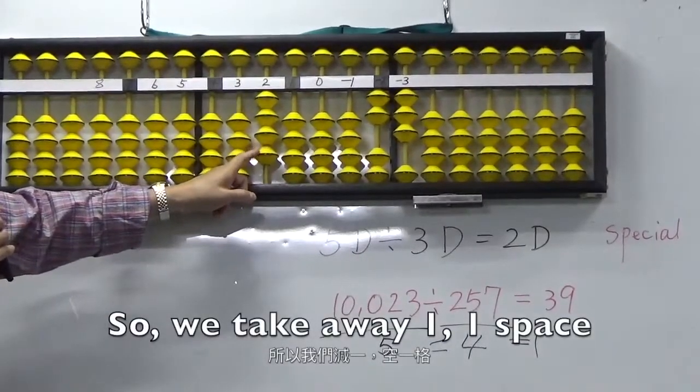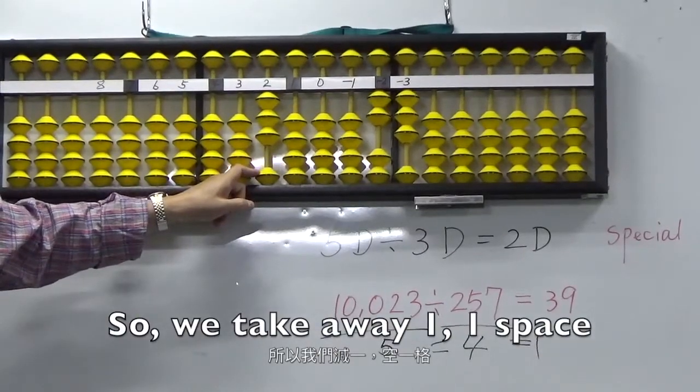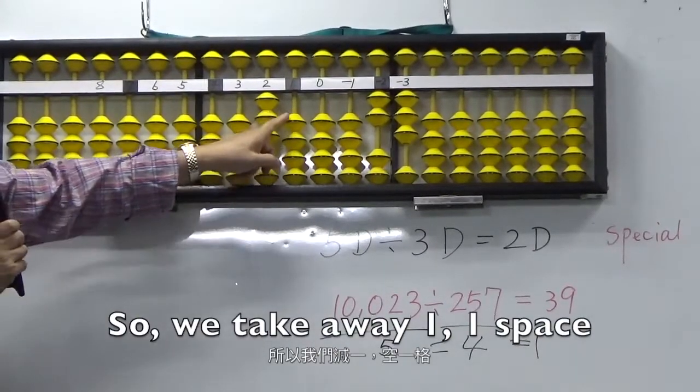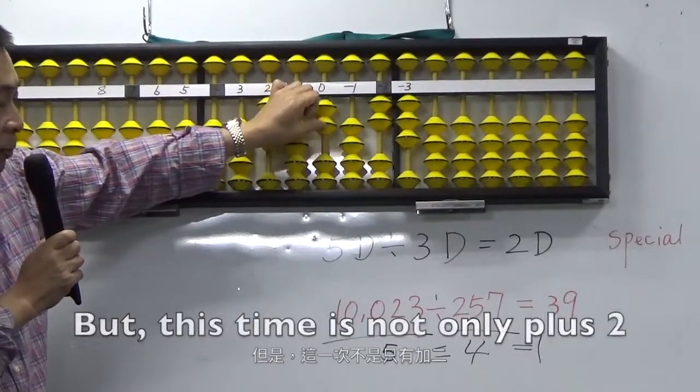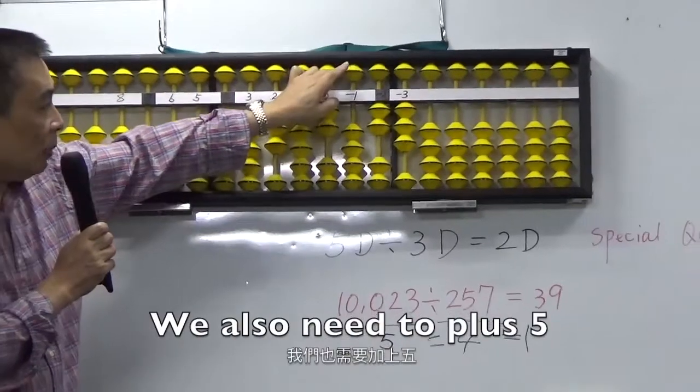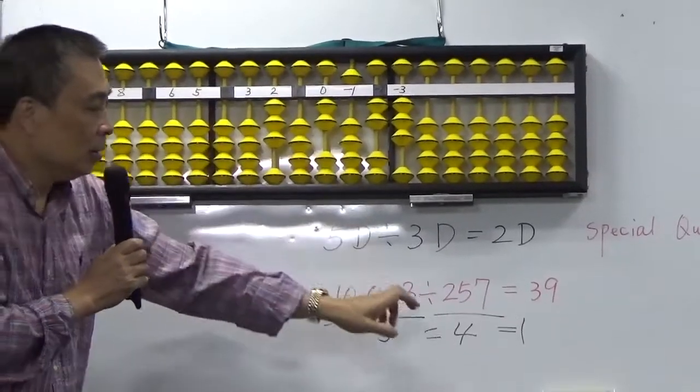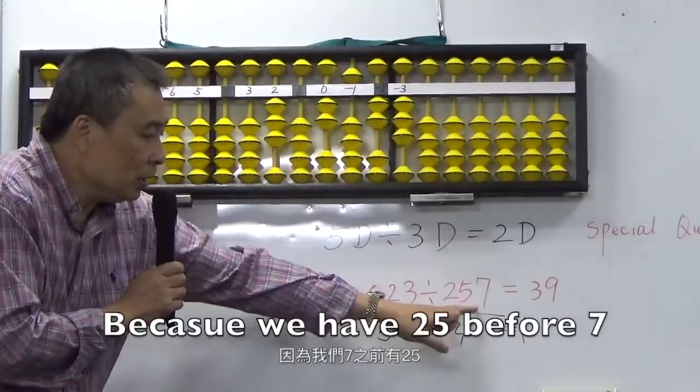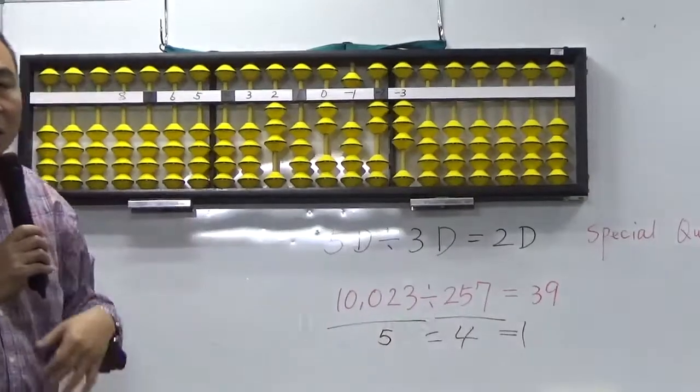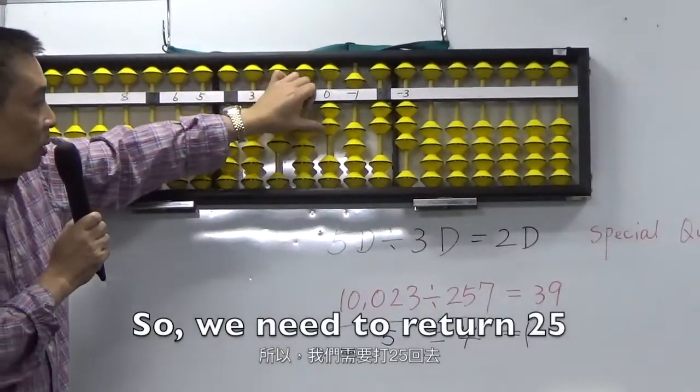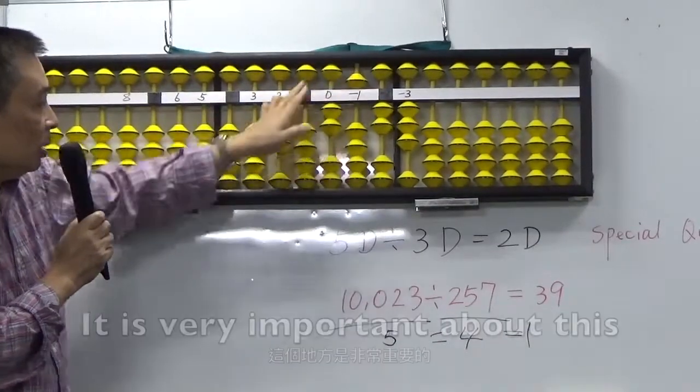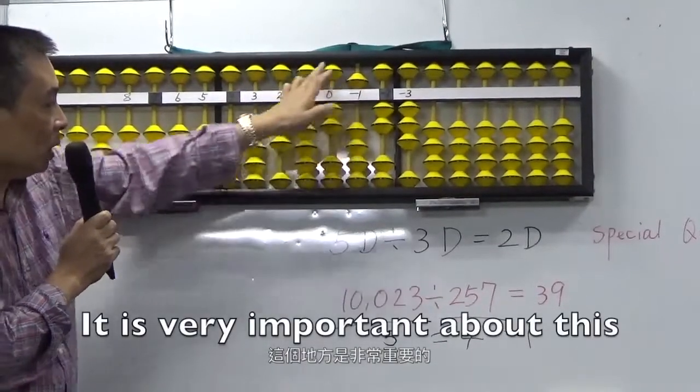So, we took away 1, 1 space. But this time, not only plus 2. We always need plus 5. Because before the 7, 25. So, we need to return 25. This is very important here.